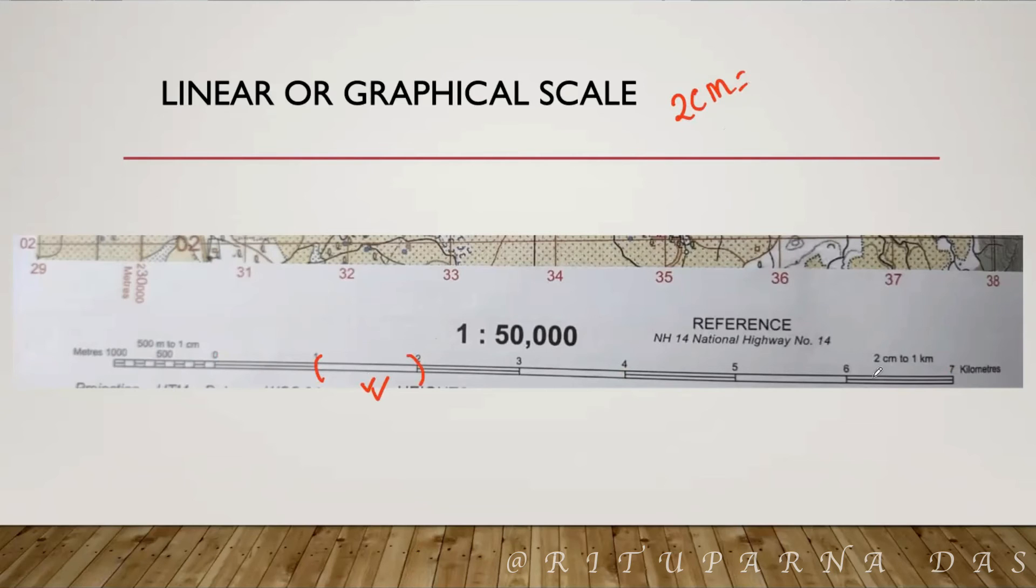How you will see the interval? You can do 7 minus 6, you will get 1. You can do 6 minus 5, you will get 1. All interval will be same. So, you can write 2 cm is equal to 1 km. This is the easiest way to understand the linear scale or the graphical scale.